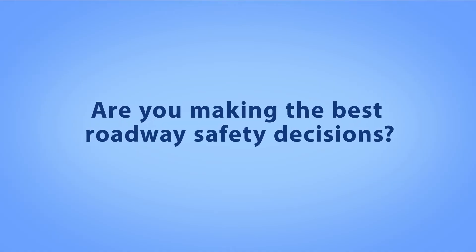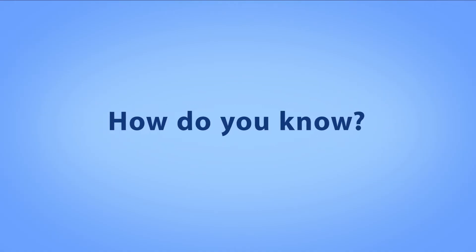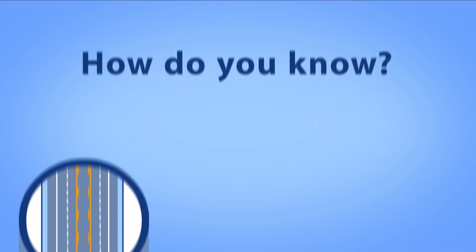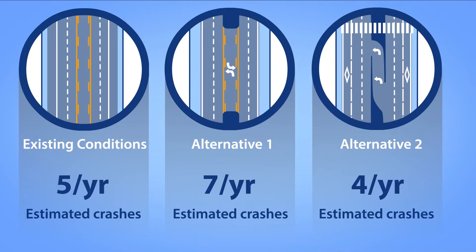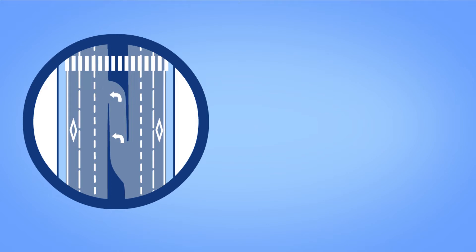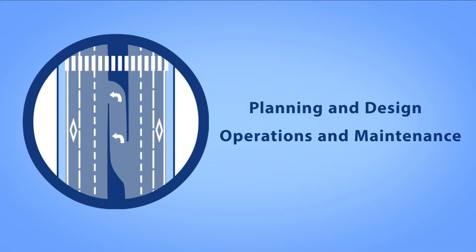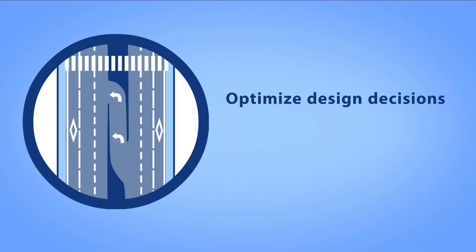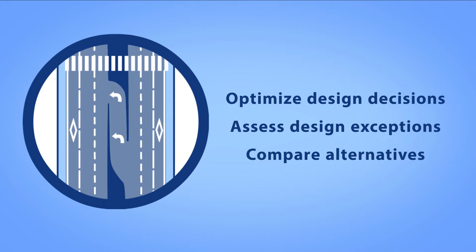Are you making the best roadway safety decisions? How do you know? One of the most basic components of evidence-based safety is quantifying safety performance in terms of estimated frequency and severity of crashes. Once you quantify the safety performance of a facility — existing or planned — you can use this information to support decisions throughout the project development process, from planning and design to operations and maintenance. For example, it allows you to optimize design decisions, assess the safety impacts of design exceptions, and compare the cost-effectiveness of alternatives.